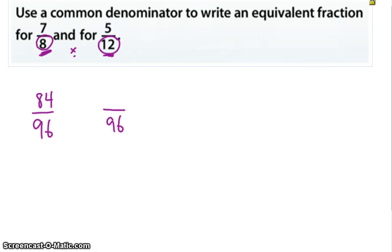So the fraction equivalent to 7 eighths is 84 96ths. Now over here, I had multiplied 8 by 12 to get to 96, so I'm going to multiply 8 times 5 to get my new numerator of 40. So we end up with 40 96ths, and that is the equivalent fraction to 5 twelfths.